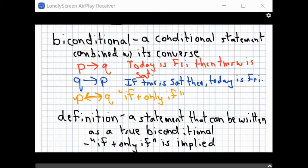So now we can take those and combine them into what we call a biconditional, meaning a double or a two-way conditional. And that is today is Friday if and only if tomorrow is Saturday.